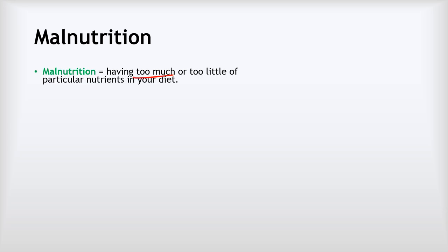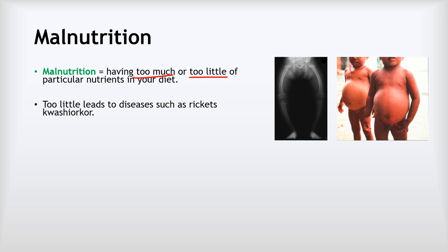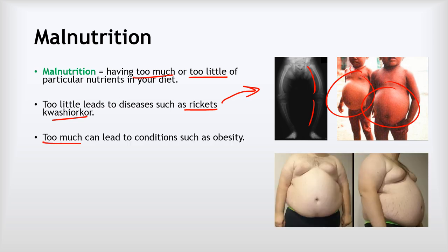Our next non-communicable disease is malnutrition. Malnutrition is about having too much or too little of particular nutrients in your diet. We often think of malnutrition as diseases like rickets, which is caused by a lack of vitamin D and makes your bones soft so they start to bend. There's another condition called kwashiorkor — if you see news articles about famines you can often see children with very swollen bellies, which is caused by not having enough protein in the diet. Too much of particular nutrients, especially carbohydrates and fat, can lead to conditions like obesity.